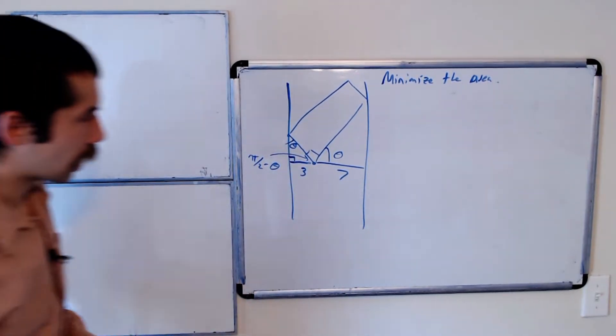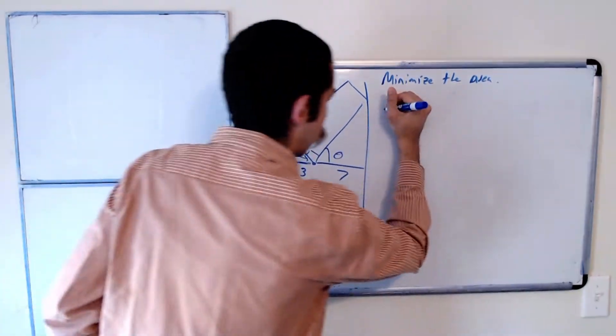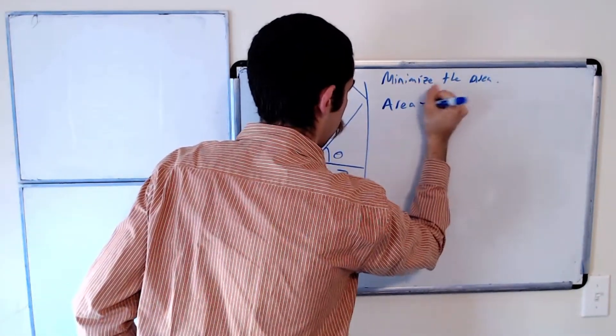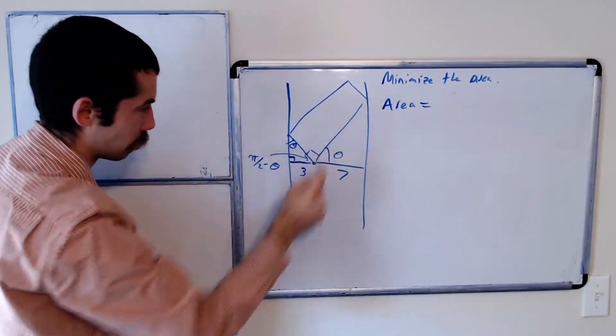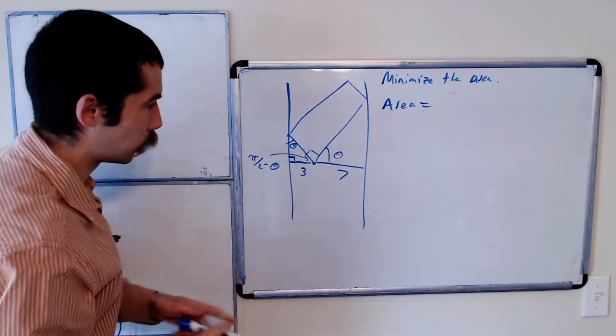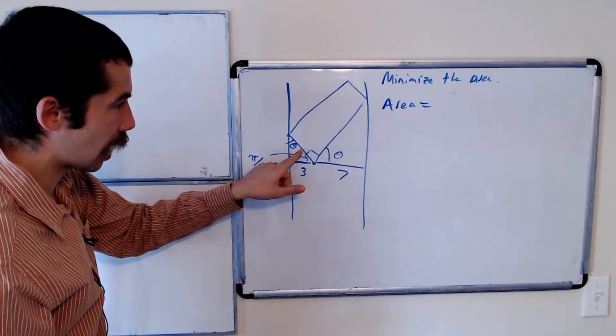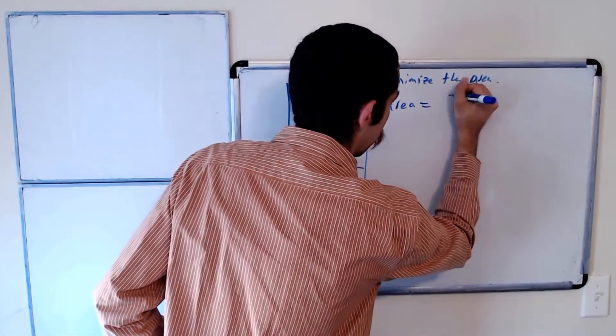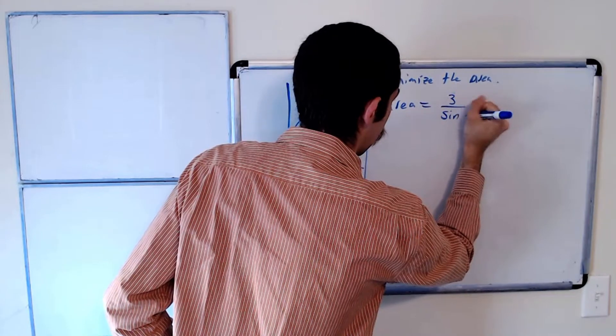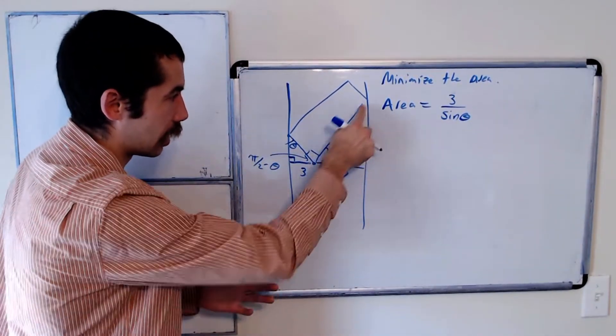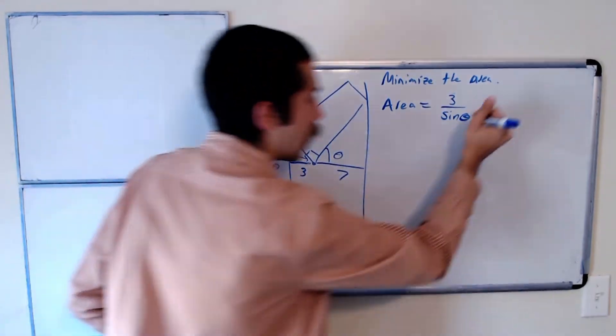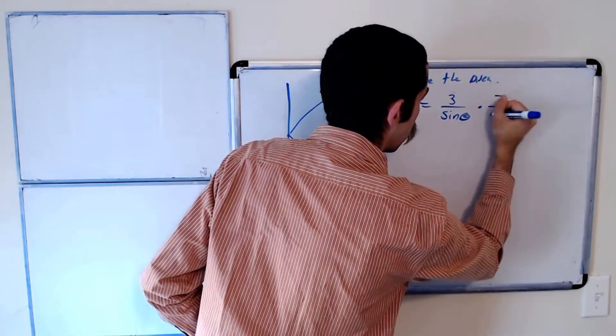The area of our rectangle is equal to this hypotenuse times that hypotenuse. With a little bit of trigonometry, you could see that this hypotenuse is 3 over sine theta. And with a little bit of trigonometry, you could see that this hypotenuse is 7 over cosine theta.